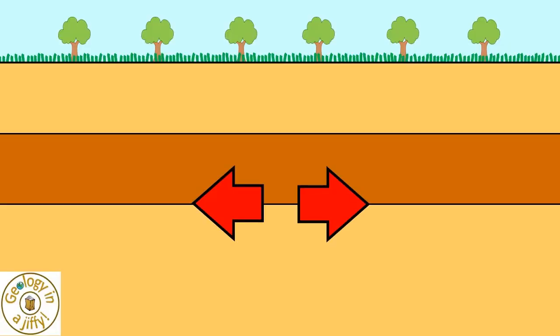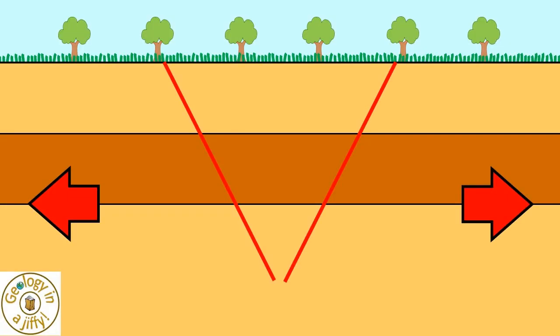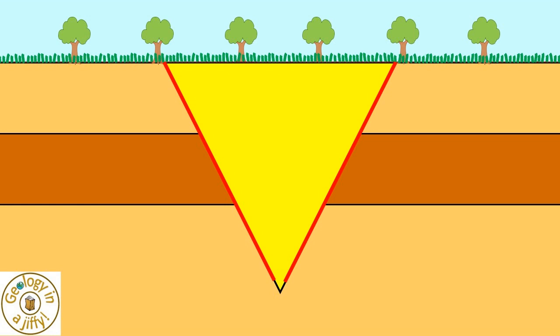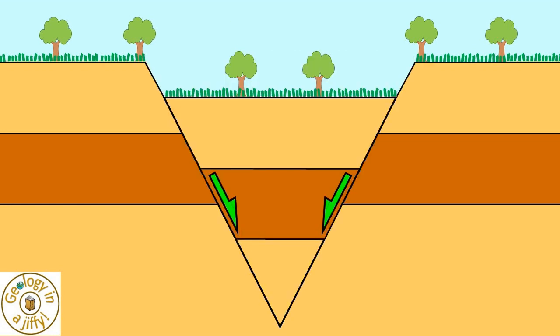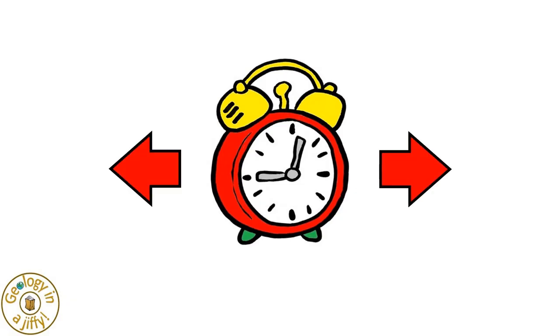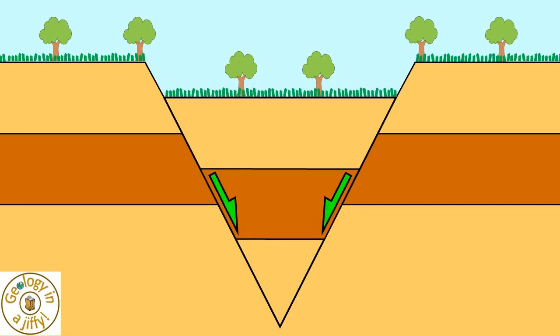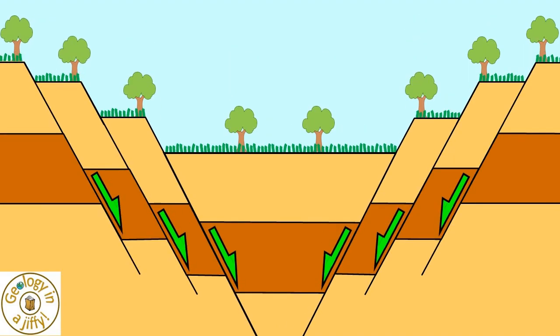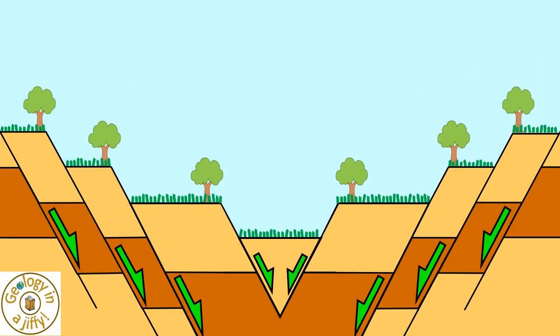In this section of extensional crust, we see the parallel normal faults appear, the graben appears and drops downwards. Over time, with further extension, we see half graben forming either side of the graben, forming a rift valley.